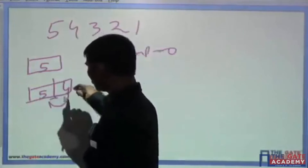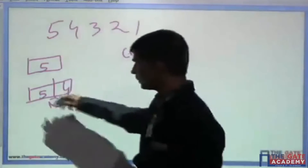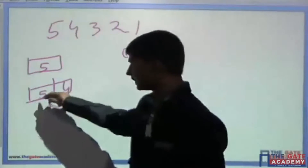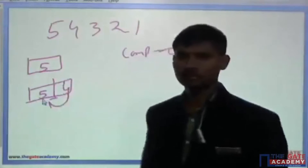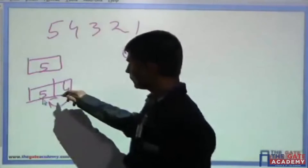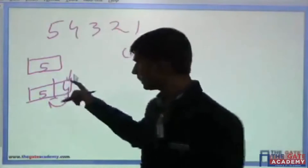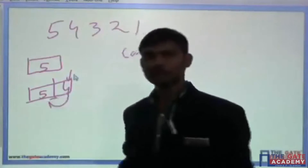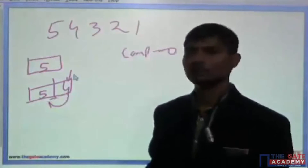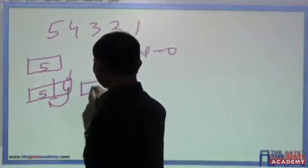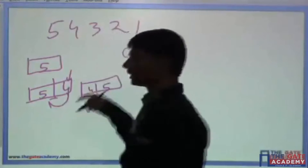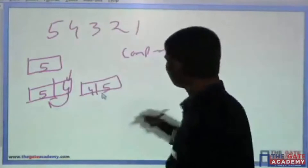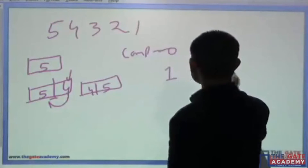As soon as the next element 4 comes, the incoming element asks the adjacent element: are you smaller than me? Then 5 says no, I am not smaller than you. So 4 learns this is not the correct position, and the two elements are swapped. Now we have 4 and 5 in ascending order: one comparison and one swap.